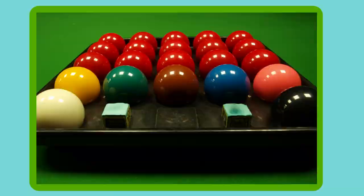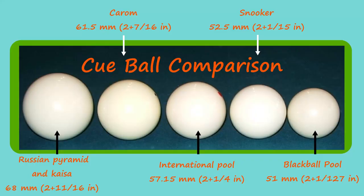A snooker ball set consists of 22 unmarked balls: 15 reds, 6 colour balls, and 1 white cue ball which is shared between the players. That's a load of balls. A snooker ball has a diameter of 2.0625 inches (52.5 millimetres). A pool ball ranges from 2.25 inches (57.15 millimetres) up to 2.375 inches (60.33 millimetres) in diameter. So this is something we've known all along — America has the biggest balls.